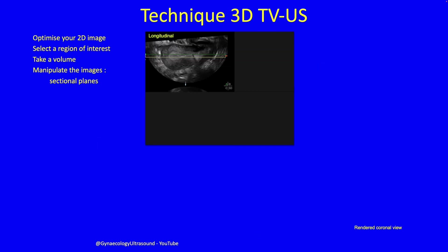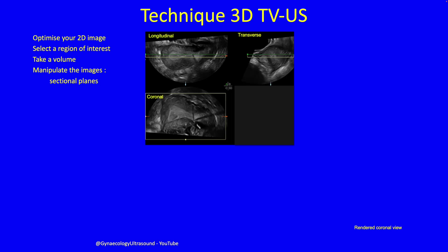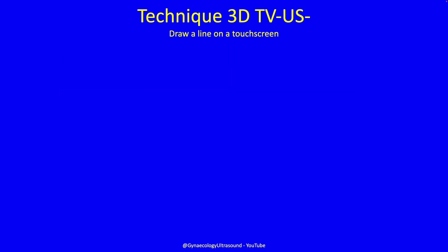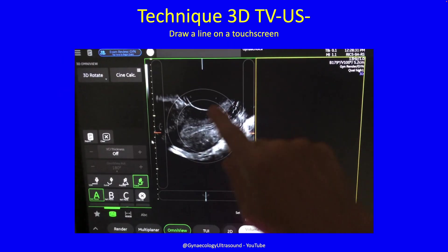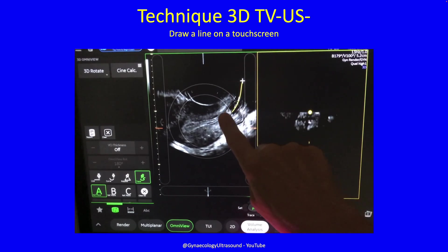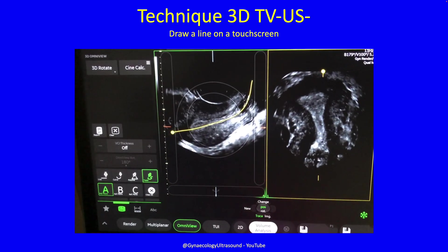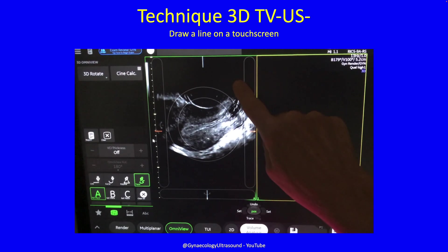So how do you do it? You optimise your image, take the volume, and that will then display to you as a longitudinal view, a transverse view, and a coronal view. You can then render that into a plane that you can manipulate more easily. Another way, more recently, is to use a touchscreen on some machines — this is a GE — and you can see that by drawing that line, the coronal view just pops into view.